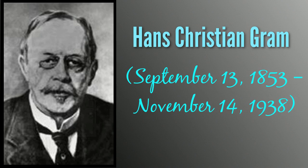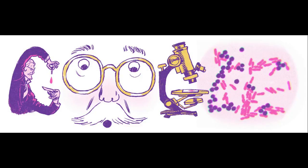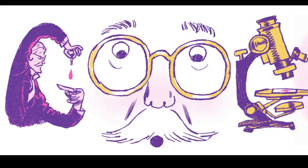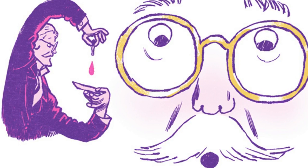Gram stain, or Gram staining, also called Gram's method, is a method of staining used to distinguish and classify bacterial species into two large groups: Gram-positive and Gram-negative.